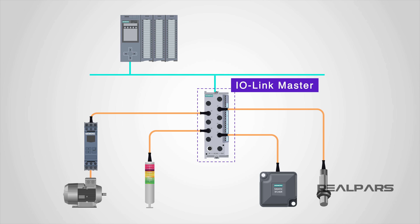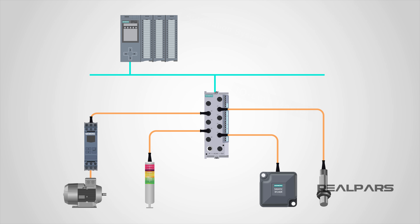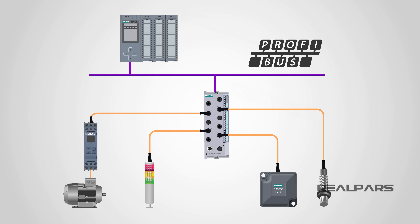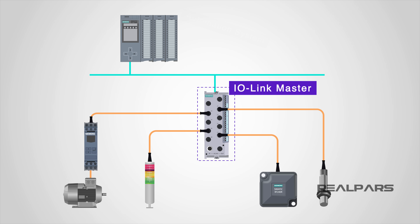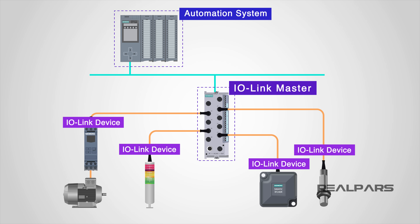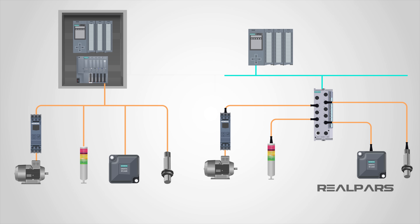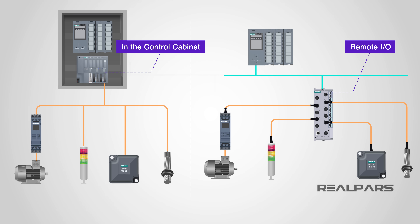The IO-Link master is capable of processing digital signals and analog values. Its versatility means it is capable of integrating into existing systems and can communicate using the industry-recognized PROFINET, PROFIBUS, or MODBUS, to name a few. The IO-Link master establishes the connection between the IO-Link devices and the automation system. As a component of an IO system, the IO-Link master is installed either in the control cabinet or as remote IO, directly in the field.